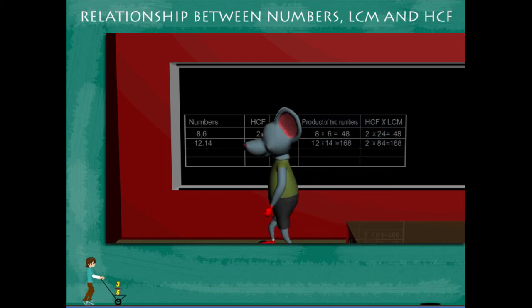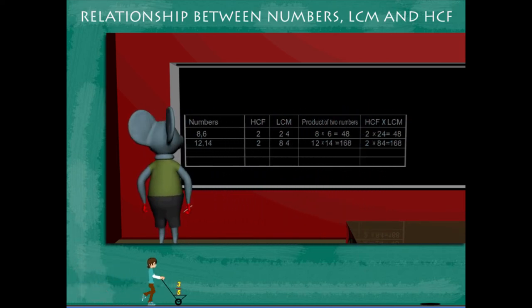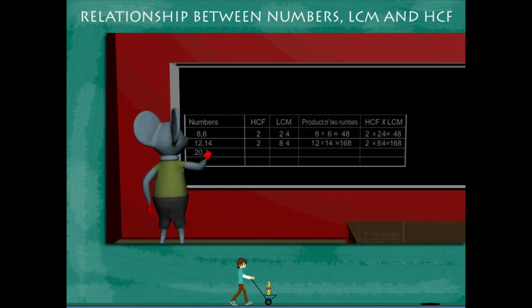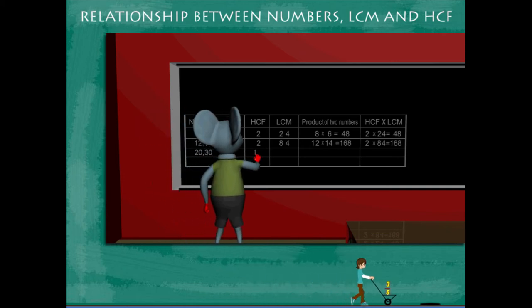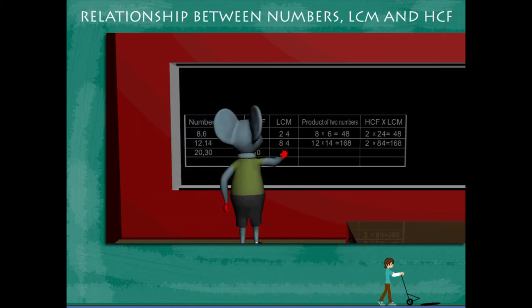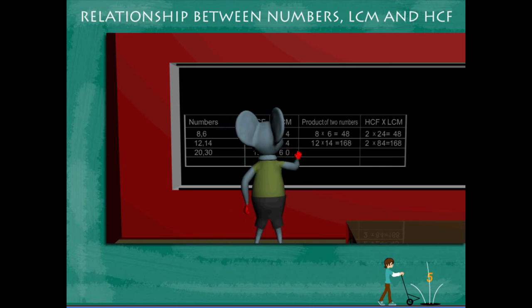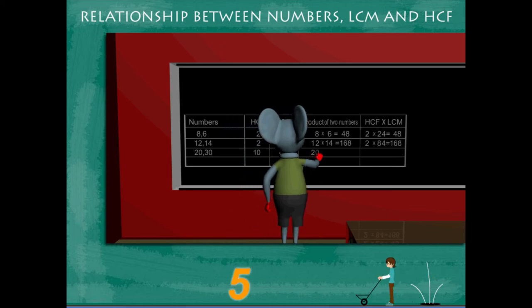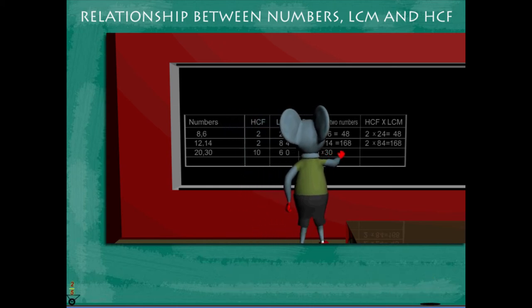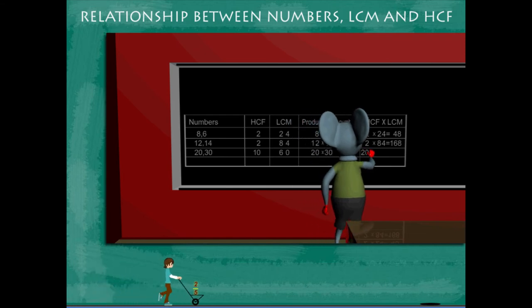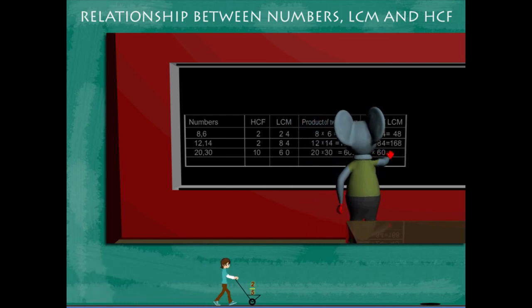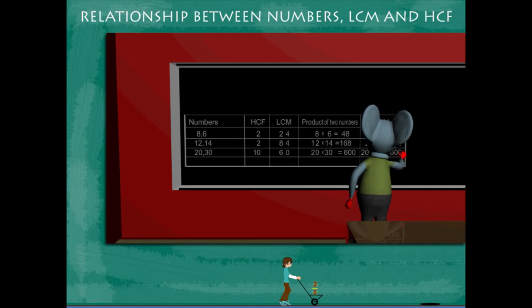The next set of numbers is 20 and 30. The HCF is 10, the LCM is 60. The product is 20 into 30 equals 600 and the product of HCF and LCM is also 600.